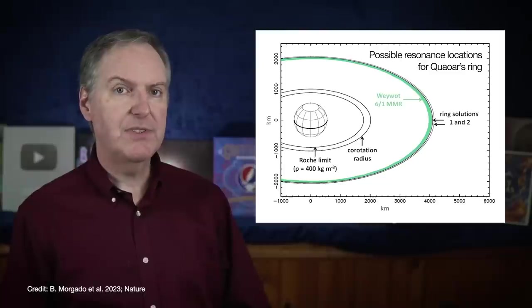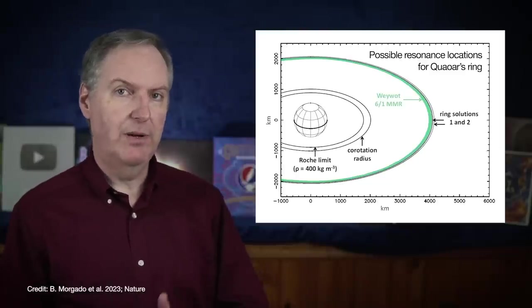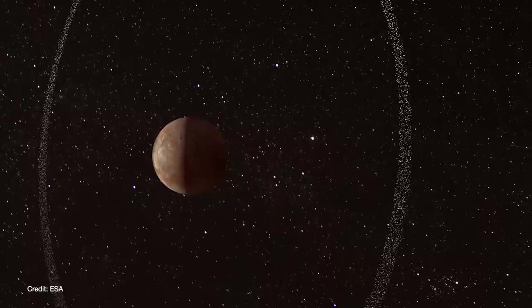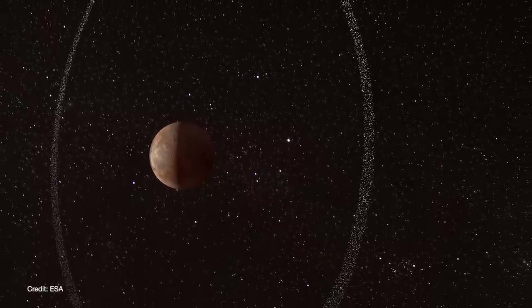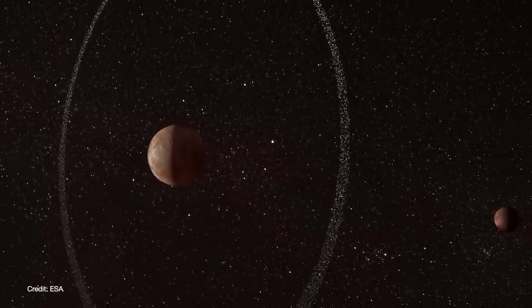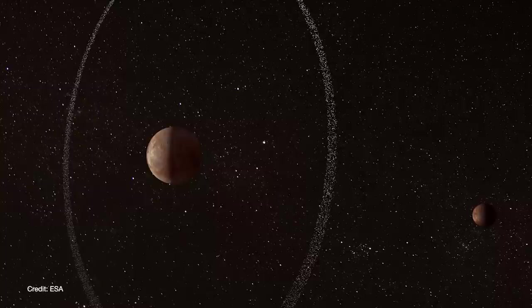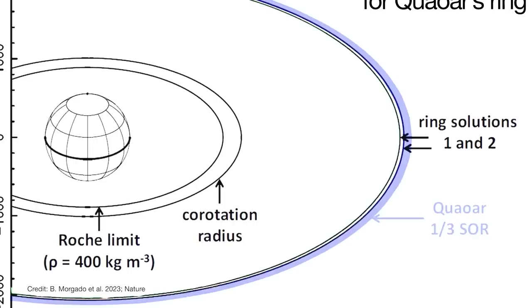Quaoar's ring seems to lie near the inner six-to-one resonance with Weywot. So in that case, the ring would complete six orbits around Quaoar for every single orbit of Weywot. The ring is also located near the distance where the orbital period of the ring body is three times longer than the rotational period of the planet. This is called a spin-orbit resonance.